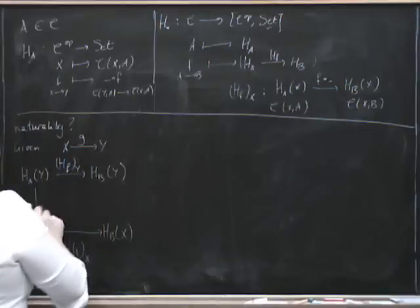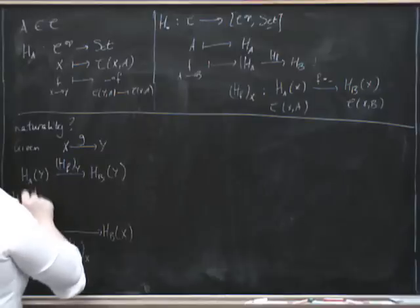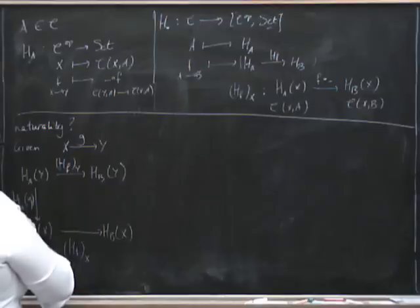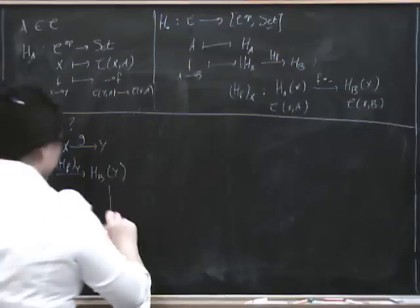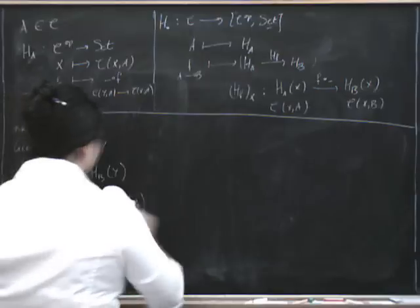Now coming down here, we've got H sub A, the functor applied to G. G goes from X to Y, so when we apply this contravariant functor to it, it goes in the opposite direction. And similarly here, this is going to be H sub B applied to G.